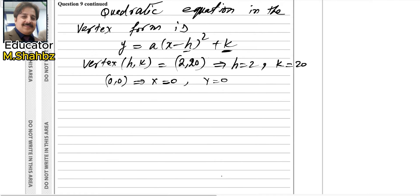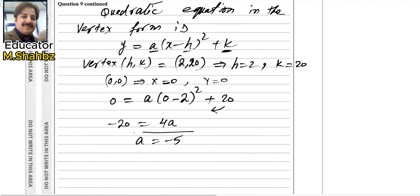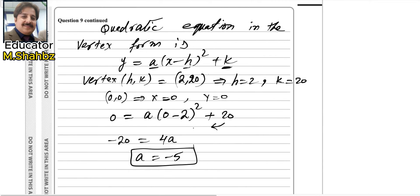The graph is passing through the origin, which means x = 0 and y = 0. We apply this point in the equation to find the value of a. Plugging in: 0 = a(0 − 2)² + 20, which gives 0 = 4a + 20, so negative 20 = 4a, and a = −5. Plugging all values back in, the required expression is y = −5(x − 2)² + 20.